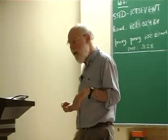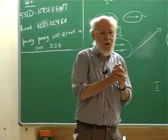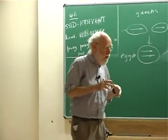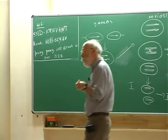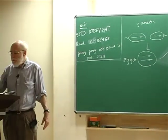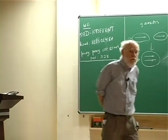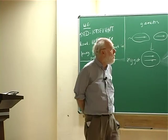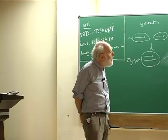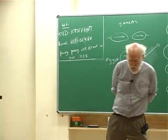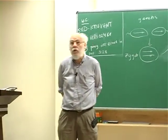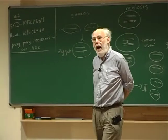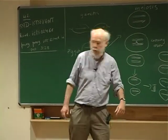Much to everybody's relief, including me, this is my last lecture for this series. What I want to talk about this lecture is the problem of what happens when we're looking at more than one position in the genome. We've been thinking about variation and evolution mainly in terms of what happens at individual nucleotide sites or individual non-recombining bits of DNA. That's a very useful first approximation, which would be completely valid if there were no associations between variants of different sites.